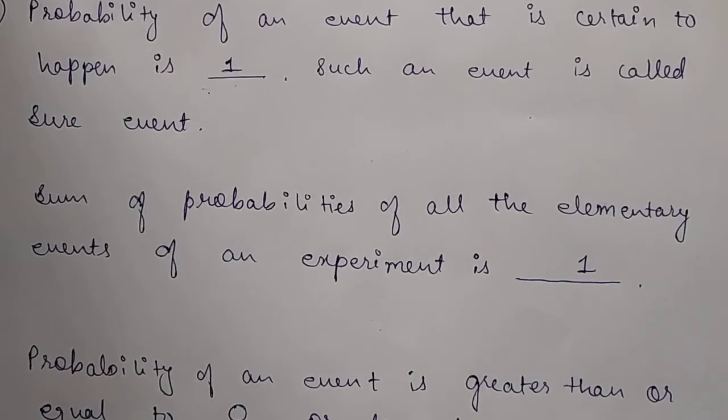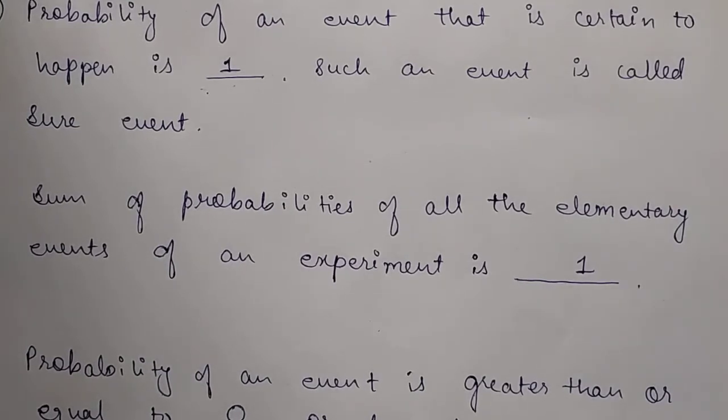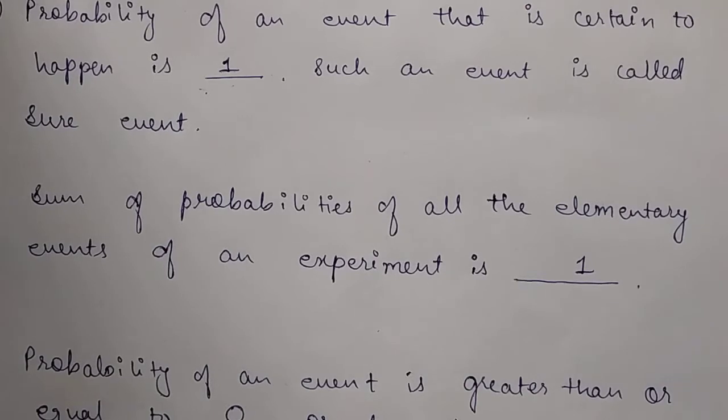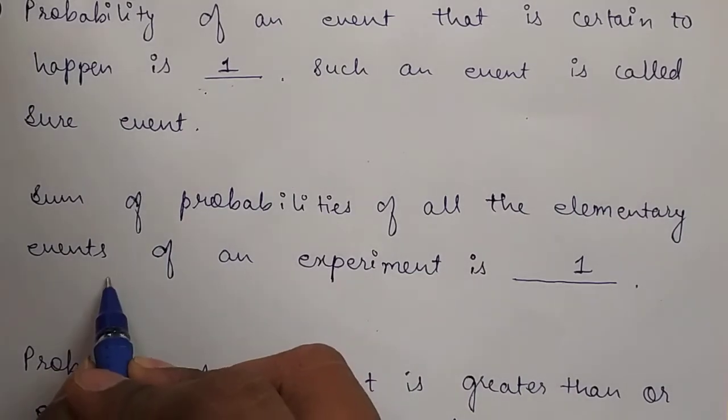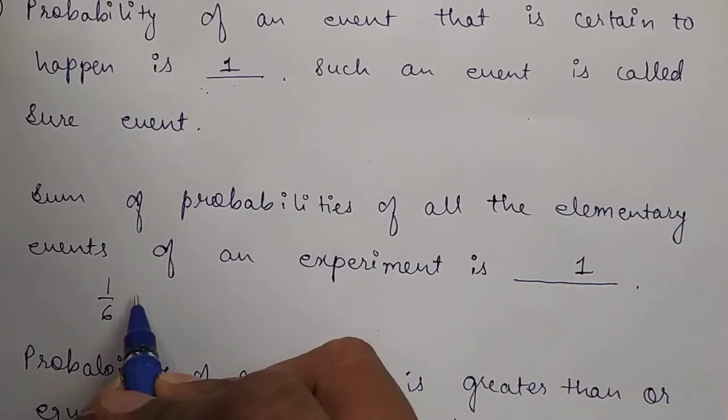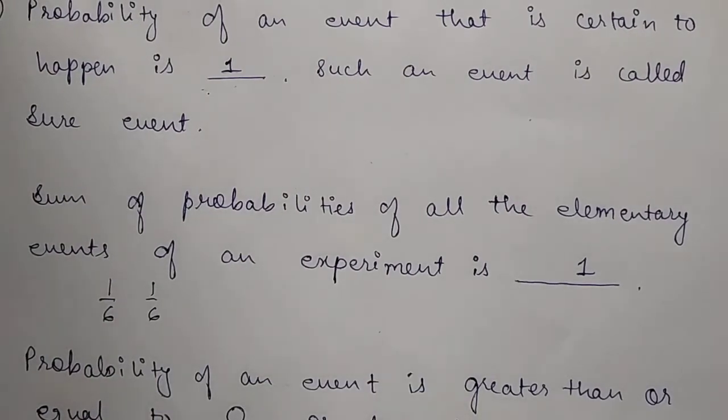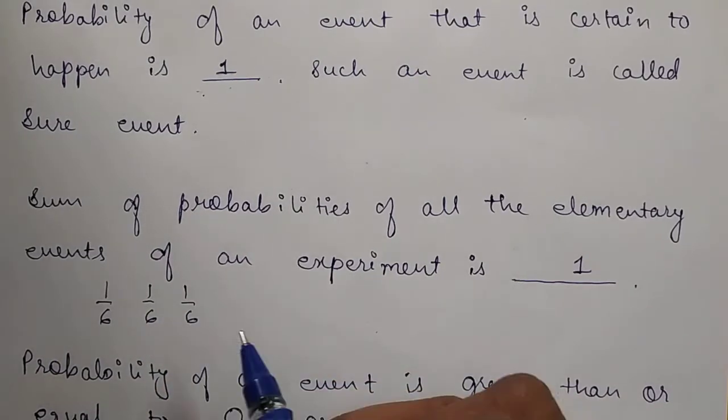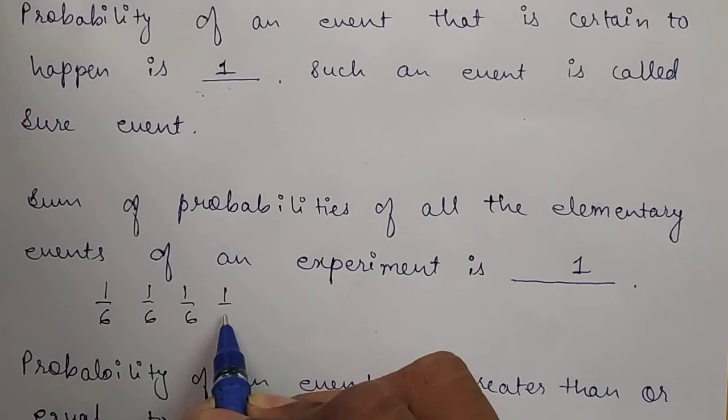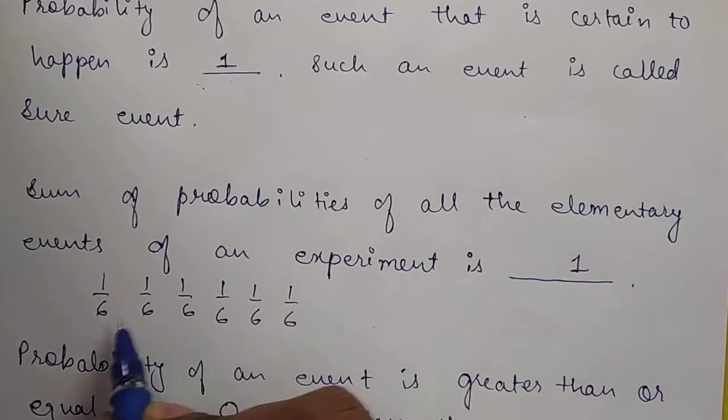For example, if I am tossing a dice, what outcomes can I get? I can get 1, 2, 3, 4, 5, or 6. If I add all of them, my probability will always be 1. For example, the chances of getting 1 are 1 by 6. The chances of getting 2 are also 1 by 6, because 2 appears once on a dice. Similarly, 3, 4, 5, and 6 each have chances of 1 by 6.